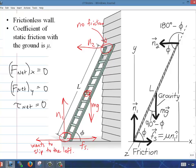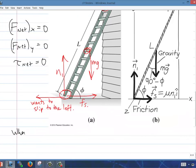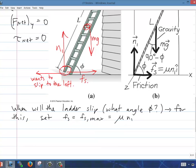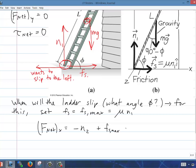When will the ladder slip? It'll be what angle will be when the static friction force is equal to the maximum static friction force, which is the coefficient of friction, static friction times the normal force at the base there, N1. So F net in the X direction is negative N2 from the wall plus this FS max. So it's going to be negative N2 plus mu times N1. Set that equal to zero. Let's call that equation one. F net in the Y direction is the gravity downwards plus the normal force one upwards. Set that equal to zero. We'll call that equation two.